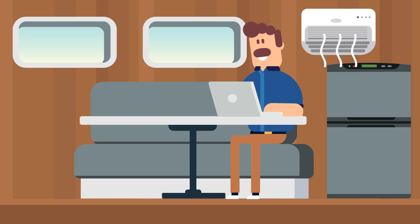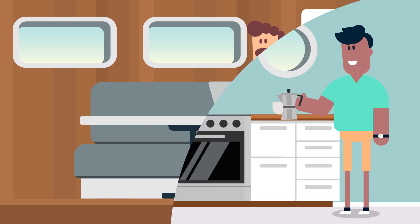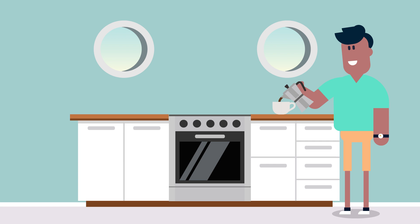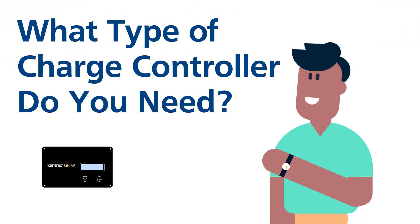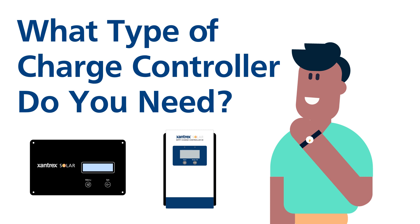In our last video, we determined that we needed four 160-watt solar panels to support our AC and DC loads. Now that we have determined the size of the solar array we need, the next step is to select the type of charge controller we need.